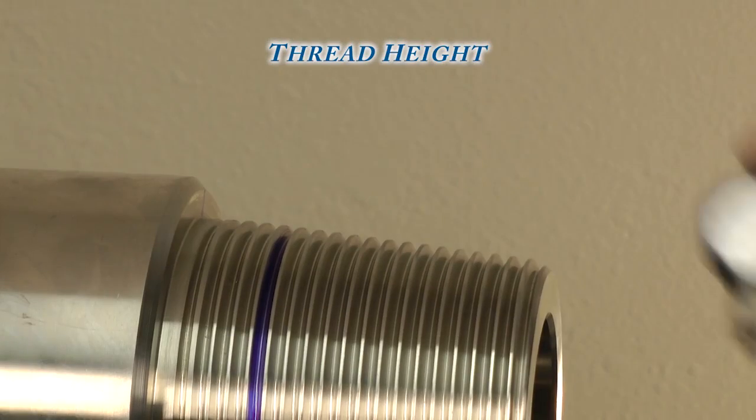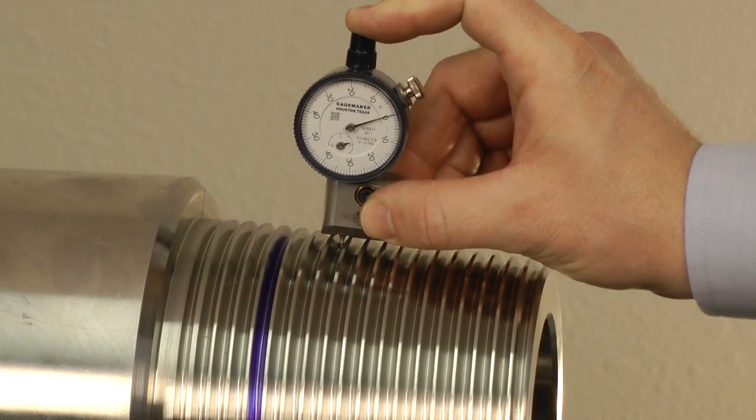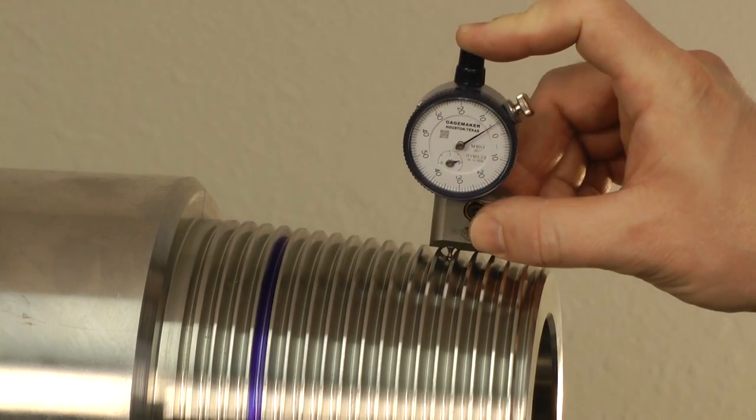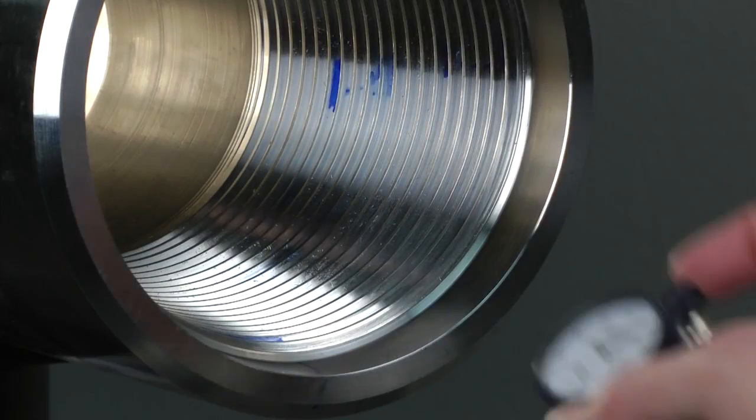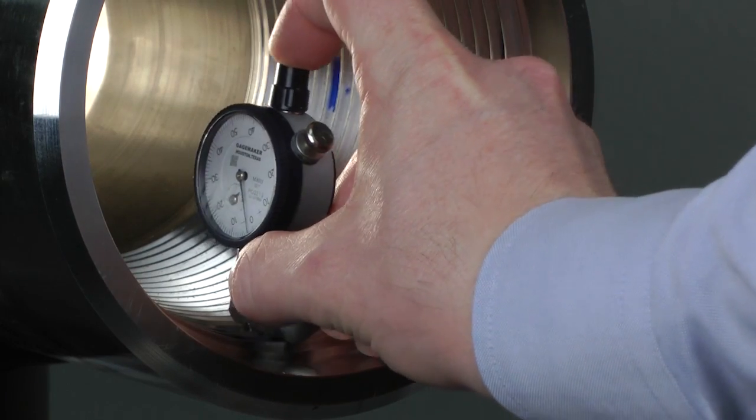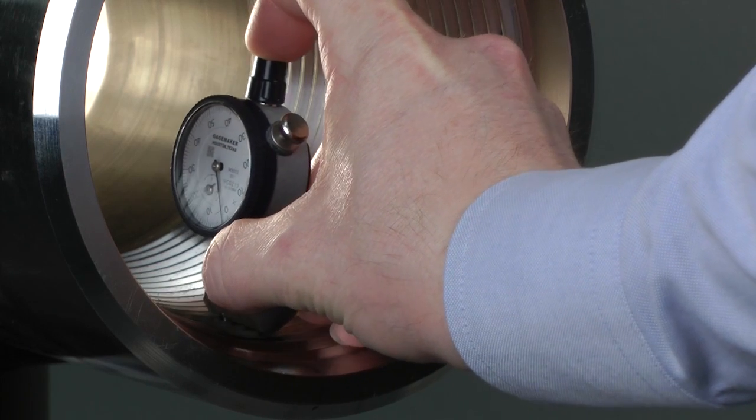In addition to lead and taper, API mandates thread height inspection for all OCTG. Proper thread height maximizes the performance of any tapered connection. GaugeMaker thread height gauges measure the root-to-crest values on a variety of external and internal connectors. Accurate thread height contributes to the interchangeability and the integrity of the threaded assembly.